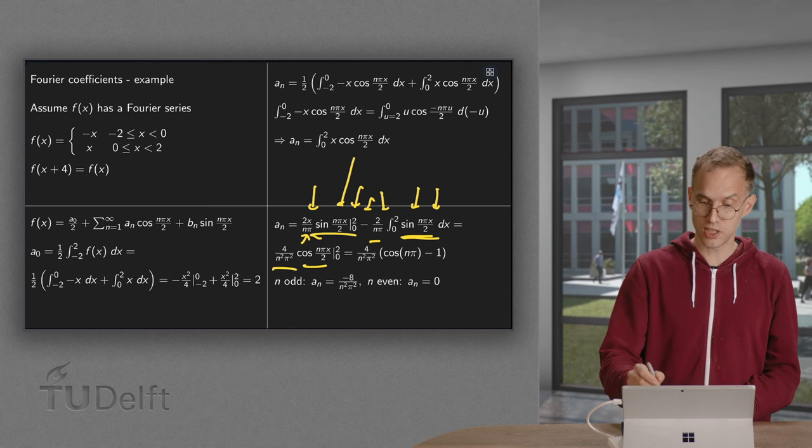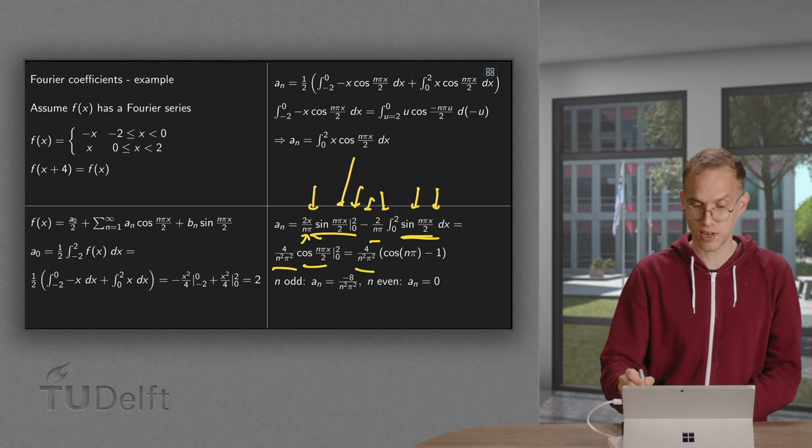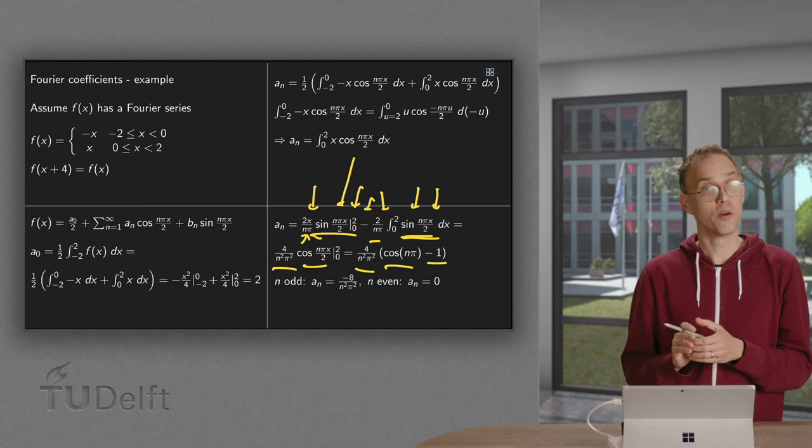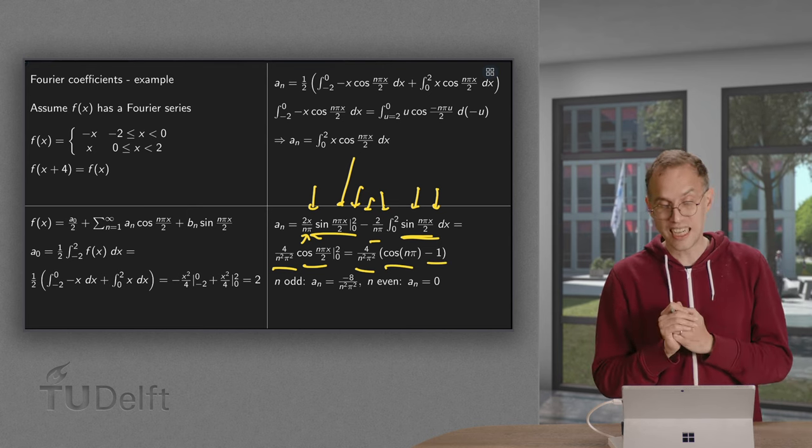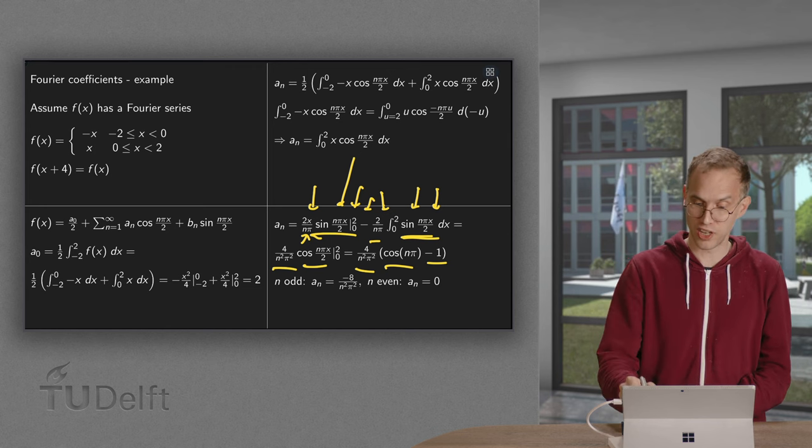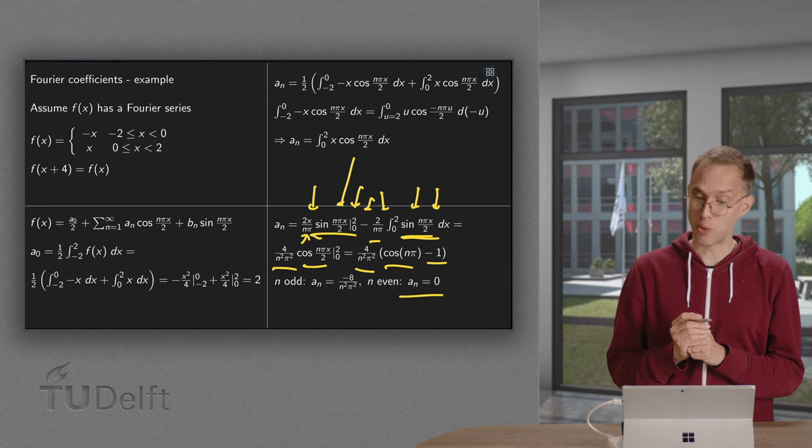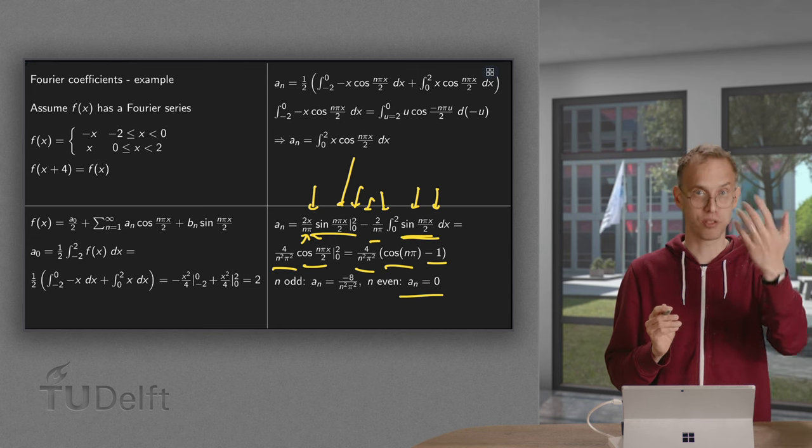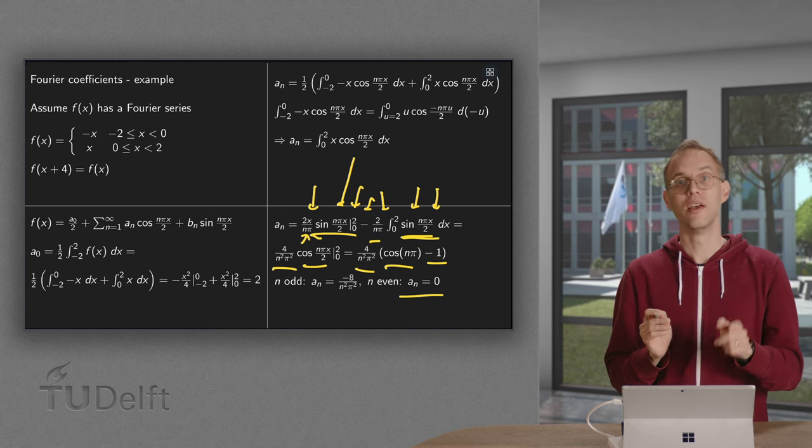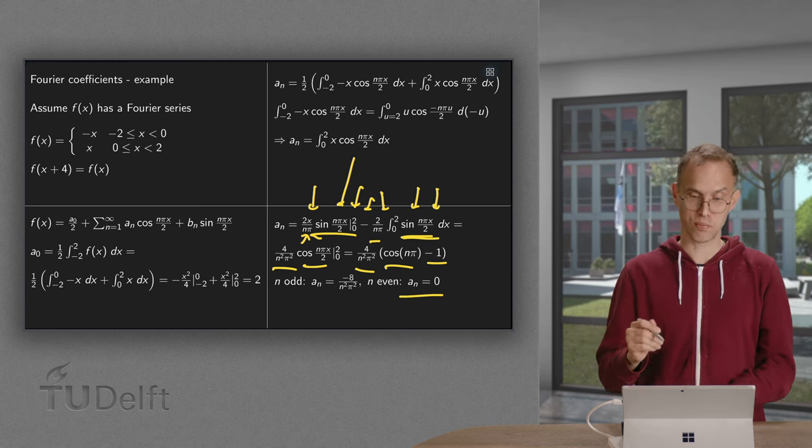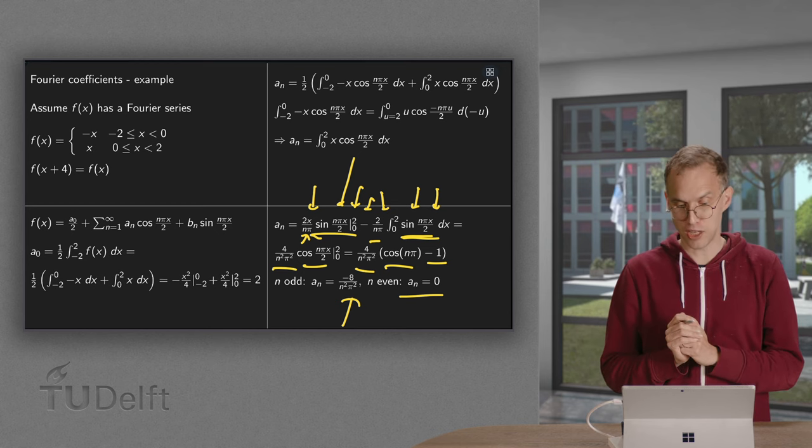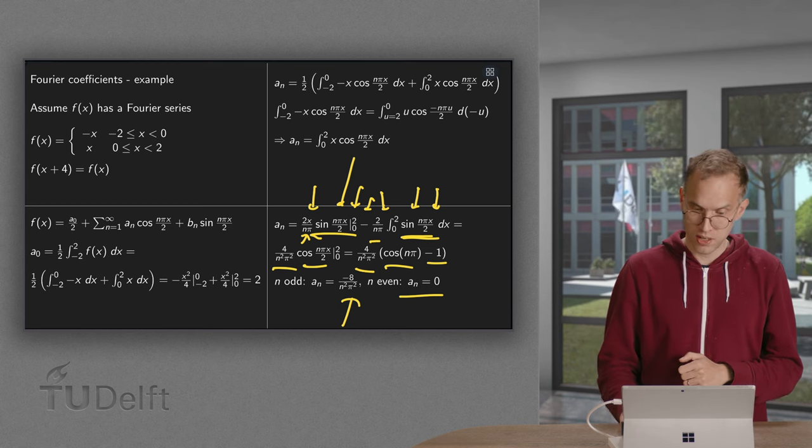And we plug in the boundaries. We get the 4 over n squared pi squared, upper boundary minus lower boundary. So what do we observe? If n is even, the cosine of n pi is 1, and we get 1 minus 1 equals 0. And if n is odd, we get the cosine pi or cosine 3 pi or cosine 5 pi, it's always minus 1. We get a minus 1 minus 1 equals minus 2, and we get a minus 8 over n squared pi squared.